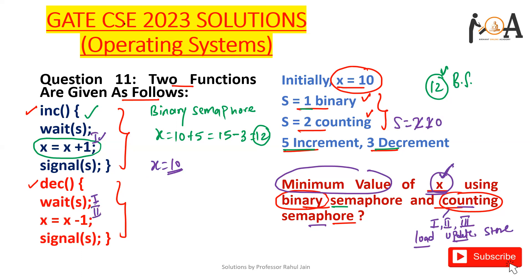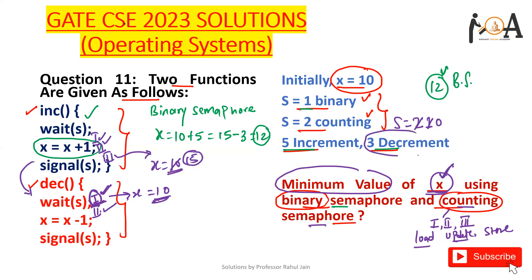Before updating, note that x has already been loaded in the decrement function as 10. Now I perform 5 increment operations in the increment function, making x equal to 15, and store it. But since our target is the minimum value, I return to the decrement operation. The decrement function had already loaded x as 10, so I perform 3 decrements, making x equal to 7, and then store it. The minimum value using counting semaphore is 7.